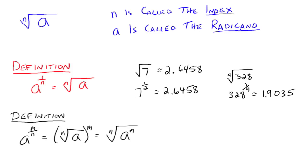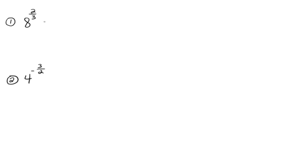A couple of examples: if you do 8 to the 2 thirds, that's the same thing as the cube root of 8 squared. The cube root of 8 is 2, 2 squared is 4. But we also could have written it the other way: the cube root of 8 squared, which is the cube root of 64, which again is just 4.